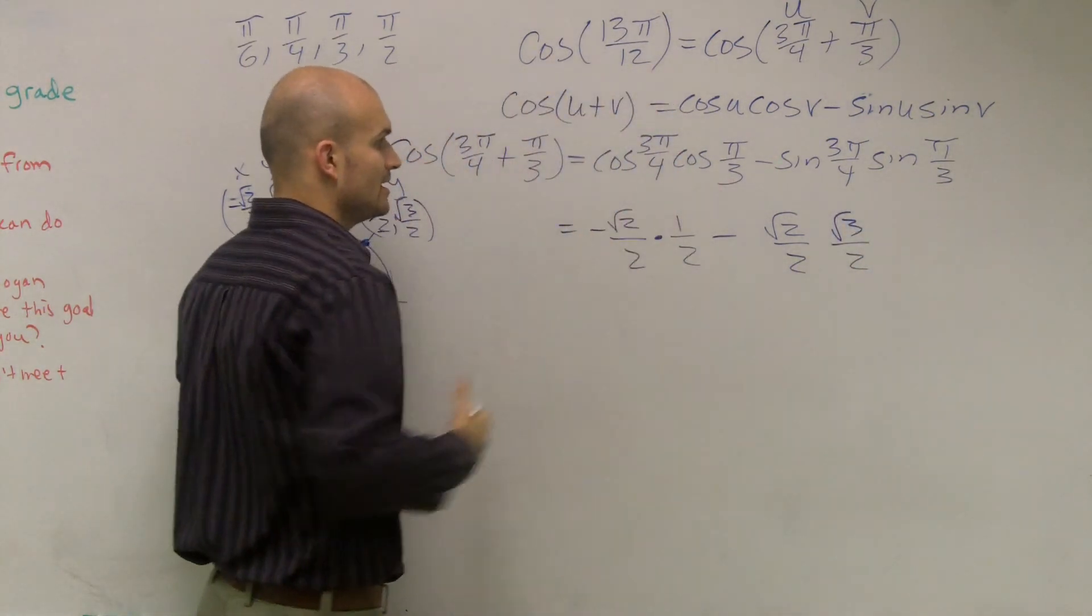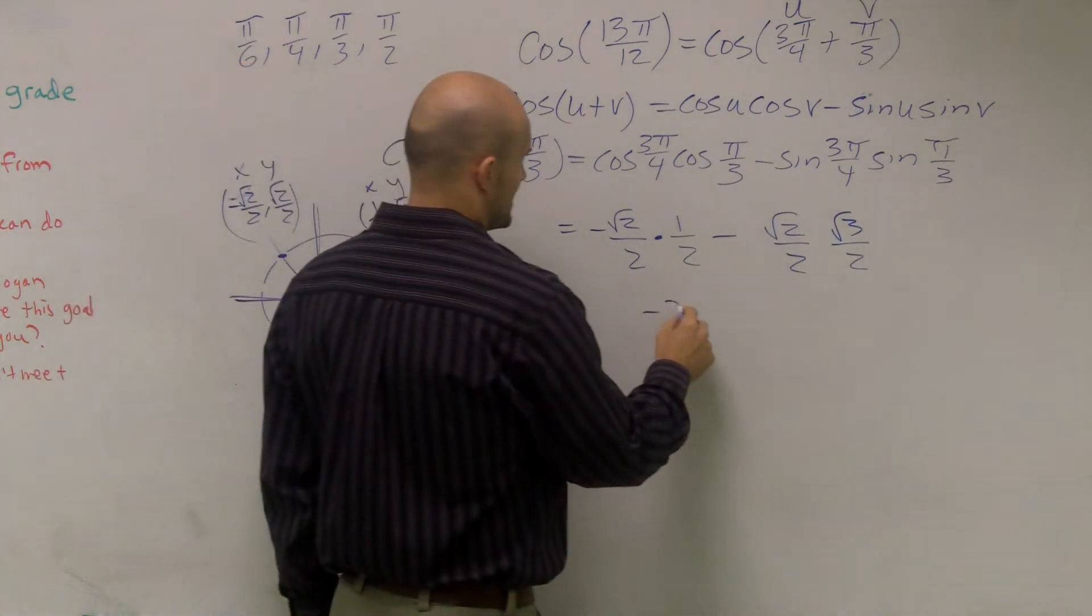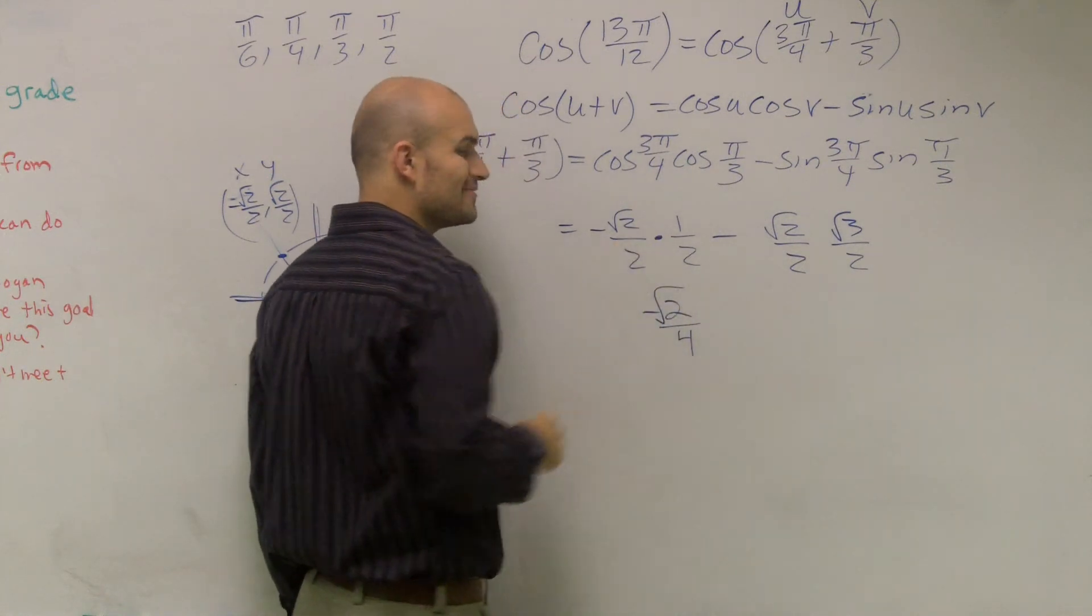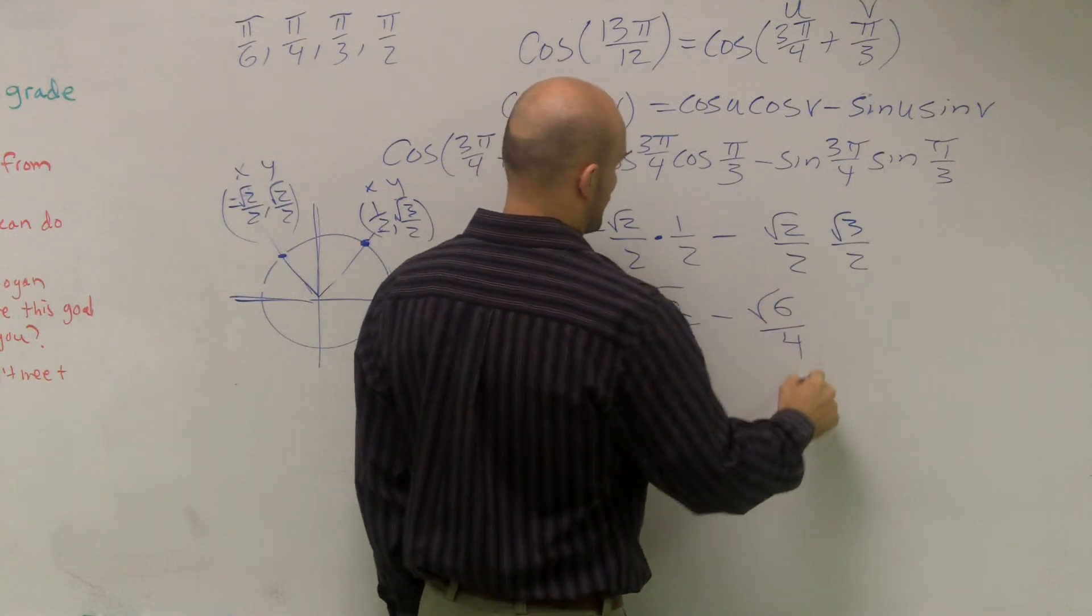Now I can simply multiply, multiply across, so I get negative √2 over, negative √2/4 minus √6/4.